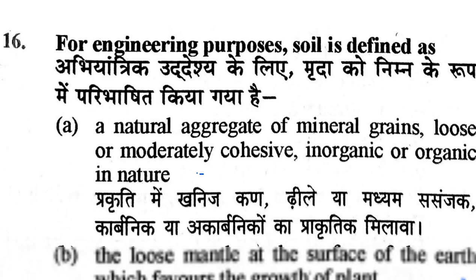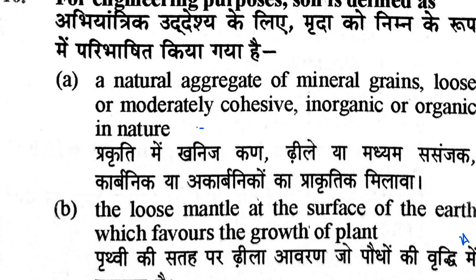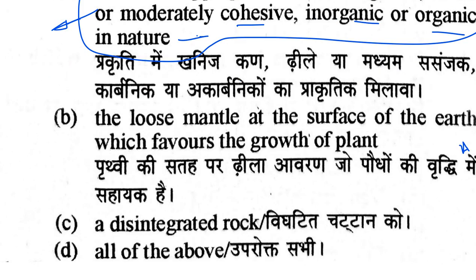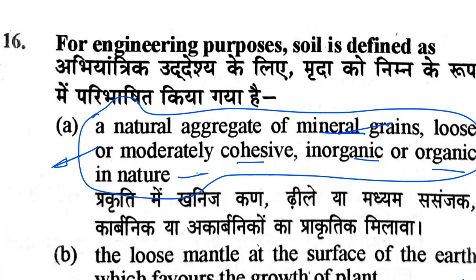Question number 16: For engineering purposes, soil is defined as a natural aggregate — a mixture of mineral grains that is loose or moderately cohesive, and inorganic or organic in nature. Most soils are inorganic or organic and moderately cohesive, composed of mineral grains. This definition comes from soil engineering. Option B defines soil as the loose mantle at the surface favoring plant growth — that is an agricultural definition. Option C — disintegrated rock — is not correct. So option A is the correct answer for engineering purposes.